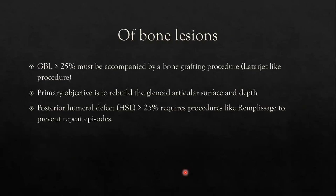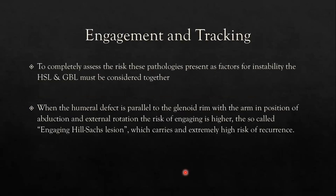For bone loss greater than 25% — and recent papers have decreased the critical threshold from 25% to 20% to 15% — bone grafting procedures such as Latarjet or Eden-Hybinette must be performed. The primary objective is to rebuild the glenoid articular surface and depth. For posterior humeral defects greater than 25%, procedures like remplissage are required to prevent repeat episodes. To understand these two procedures, you must understand the two key concepts of engagement and glenoid tracking.